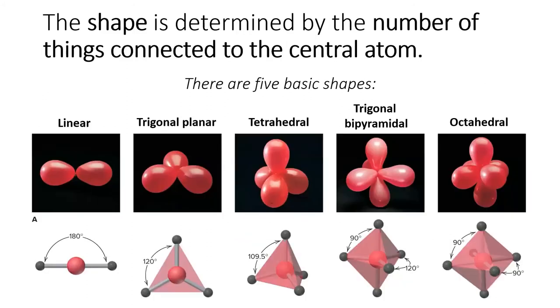There are five basic molecular shapes. The molecular shape is determined exclusively by the number of things connected to the central atom. In fact, we can recreate the five basic shapes by tying balloons together. It's that simple.